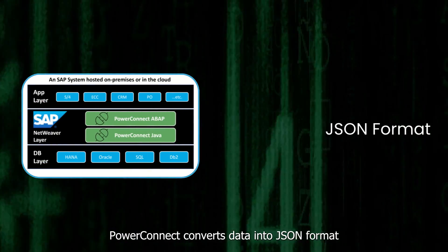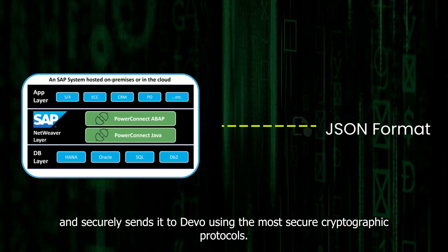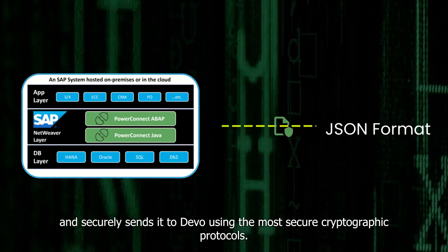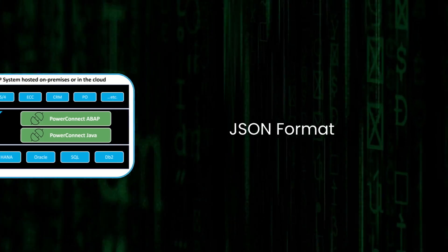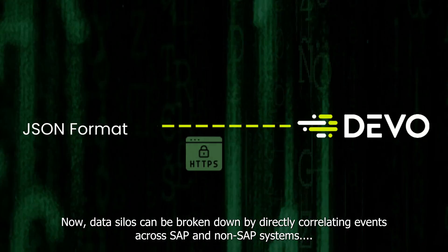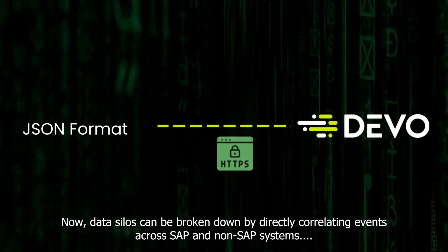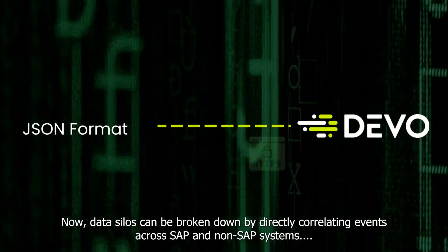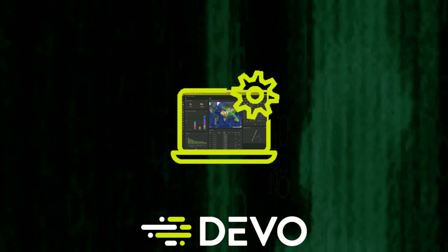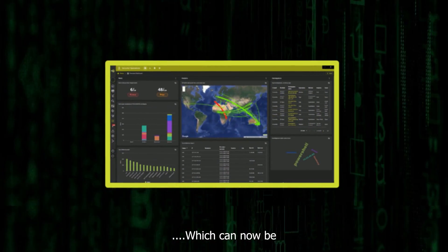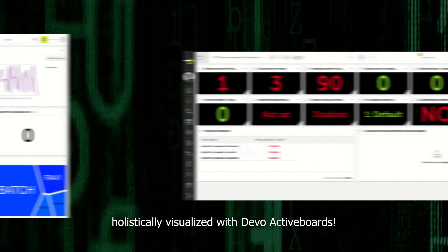PowerConnect converts data into JSON format and securely sends it to Devo using the most secure cryptographic protocols. Data silos can be broken down by directly correlating events across SAP and non-SAP systems, which can now be holistically visualized with Devo active boards.